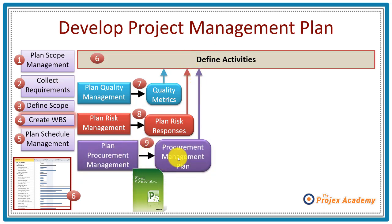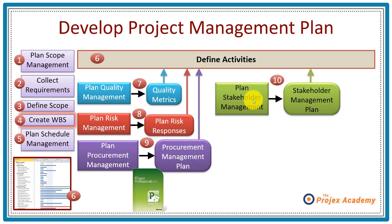Following on, there's the process called plan procurement management. The procurement management plan will also need to contain activities relevant to carrying out your procurement, if any. I'm suggesting steps seven, eight, and nine might be a reasonable sequence. At step ten, the process plan stakeholder management generates a stakeholder management plan — a strategy that says how exactly you intend to manage stakeholders, which needs to be translated into activities and resources.